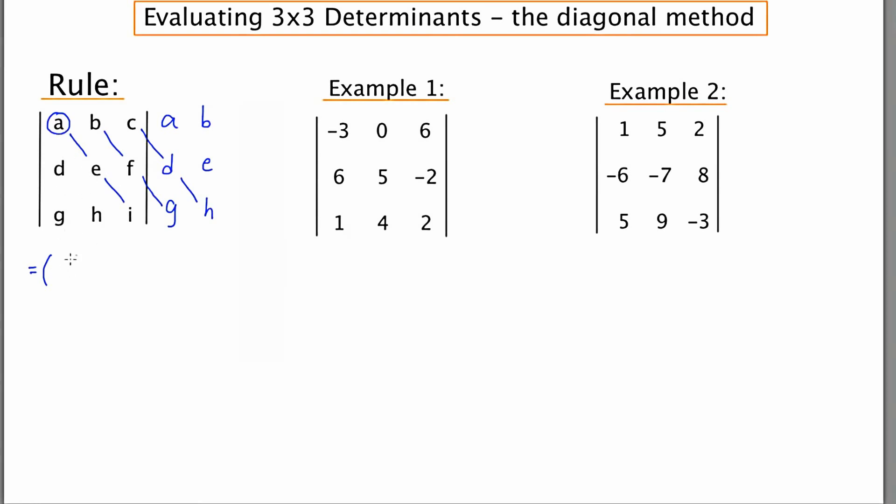So the first one's going to be A times E times I. Then I'm going to add to that the product of B, F and G. B, F and G. And then I'm going to add to that the product of C, D and H.